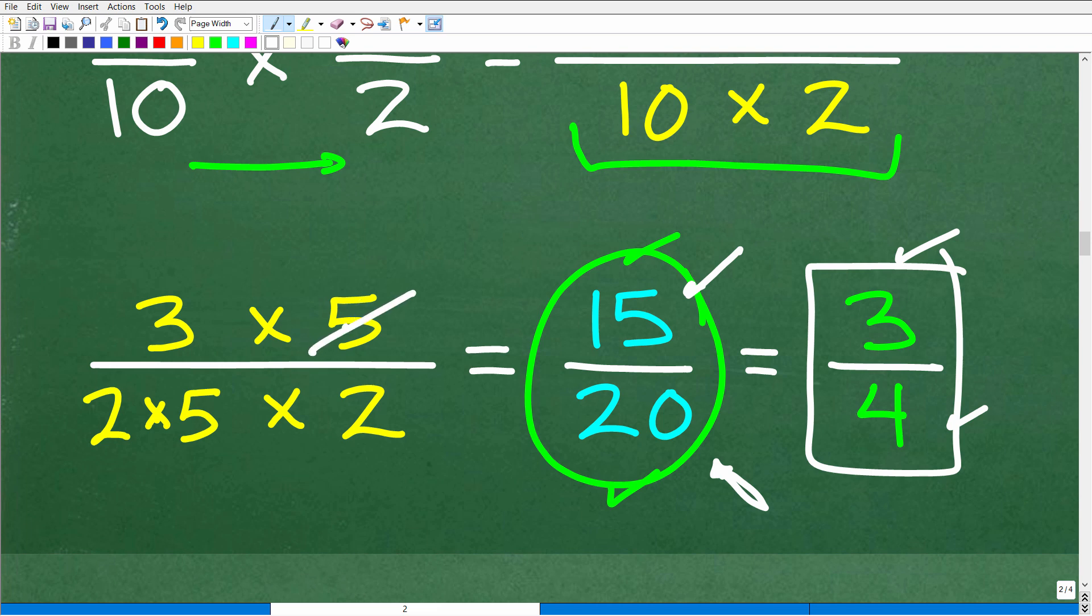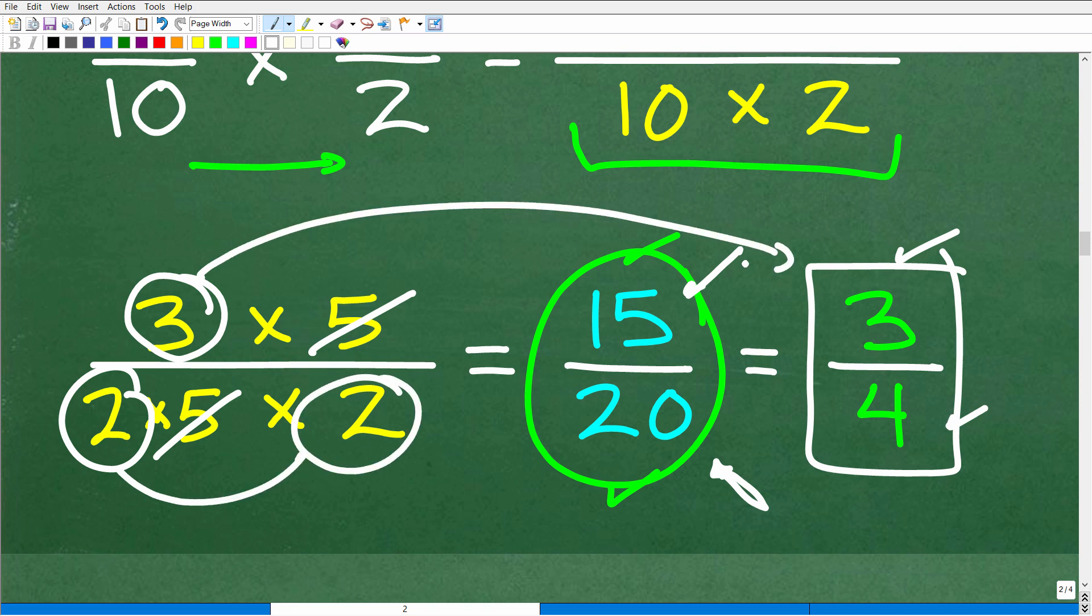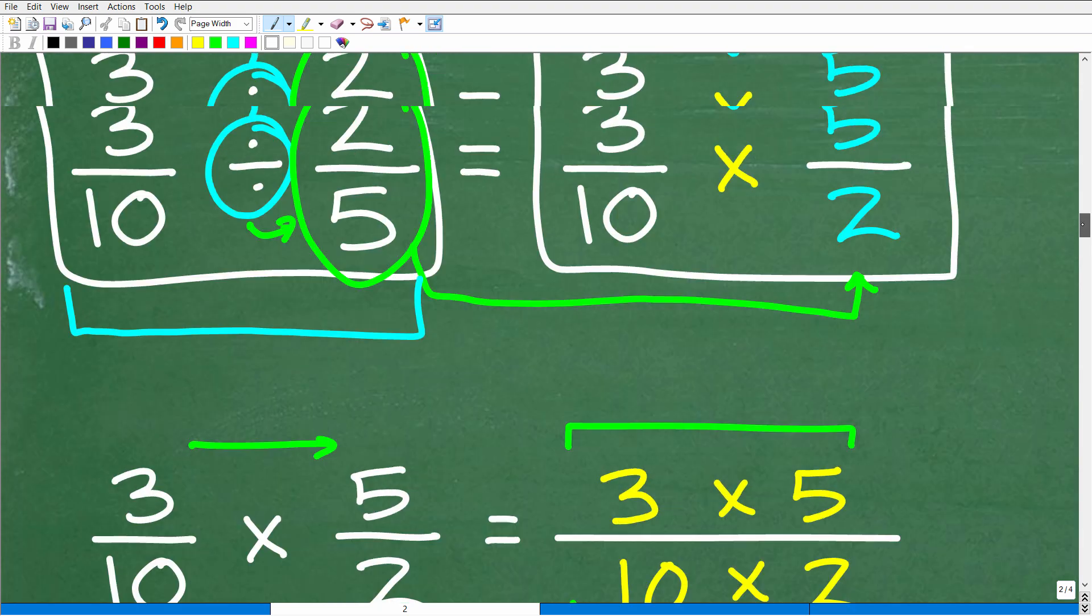Oh, I got a 5. We can cross-cancel that. So there's no more like factors between the numerator and denominator. So that leaves us with a 3 and a 2 and a 2 down here. 2 times 2 is 4. And then just a 3 in the numerator. Okay.